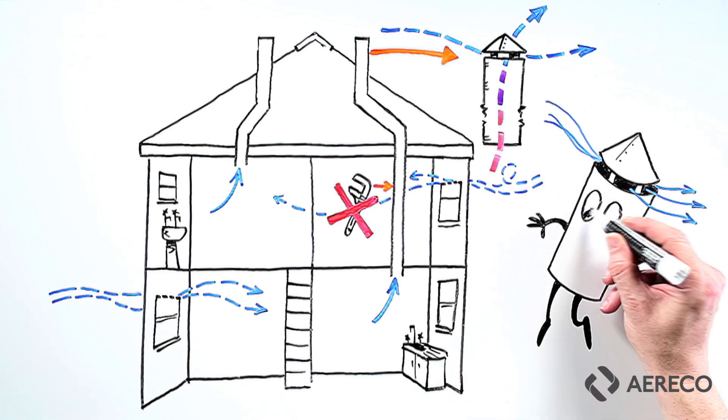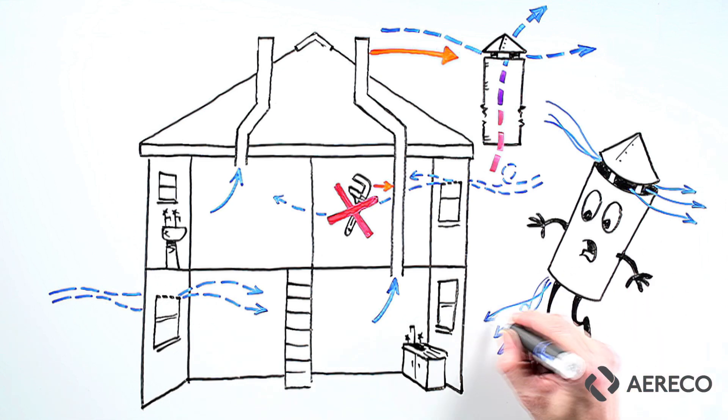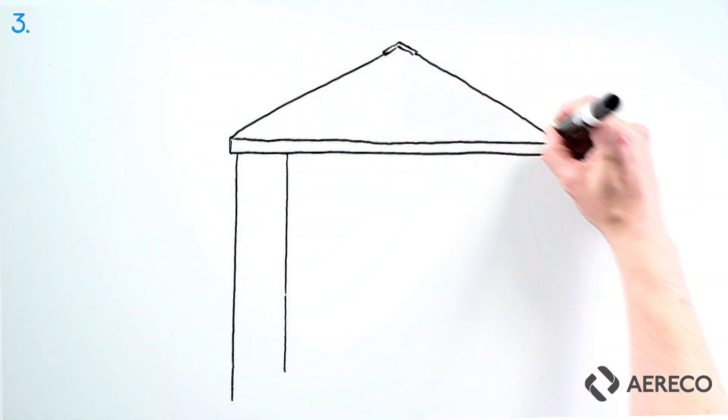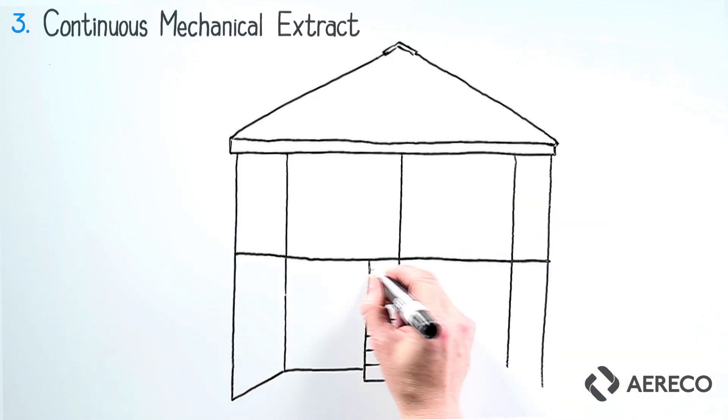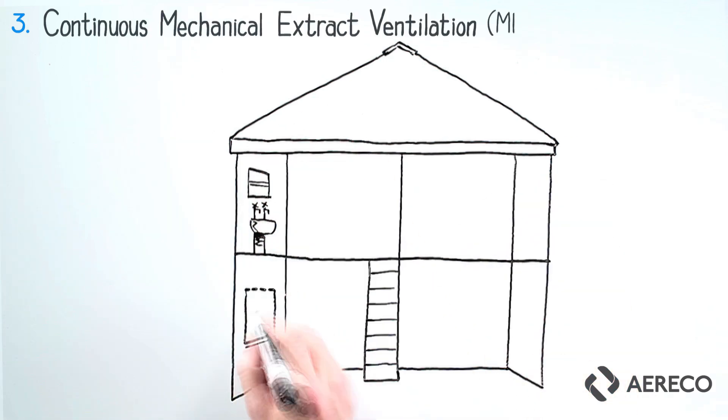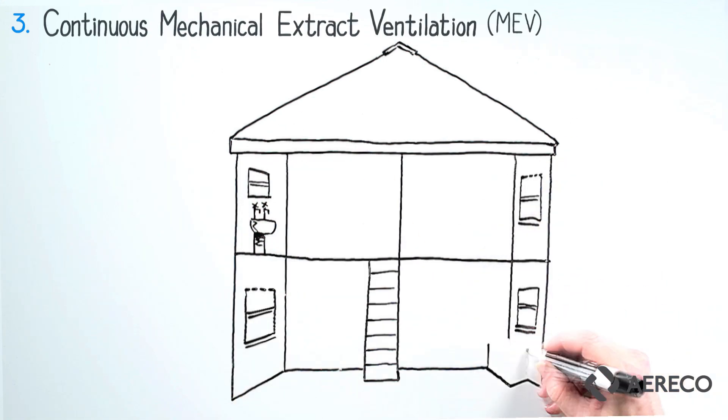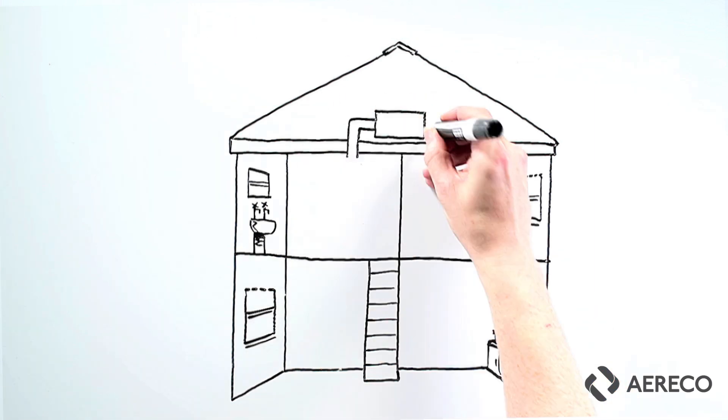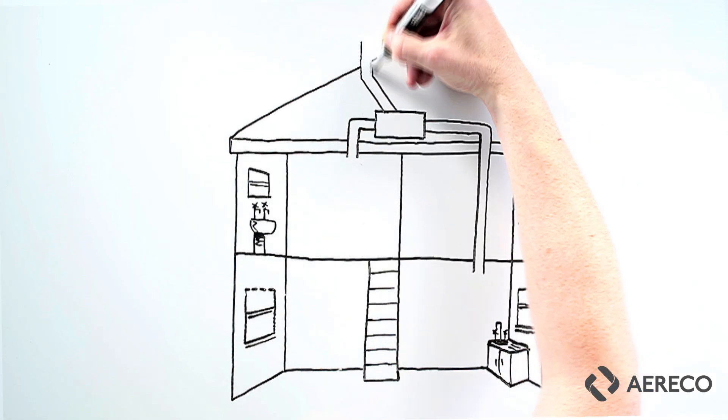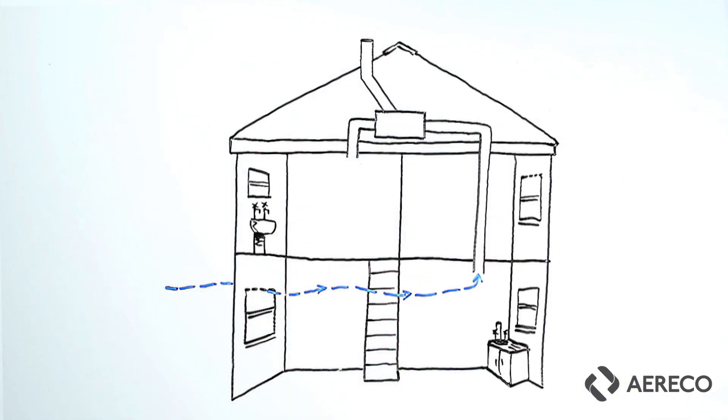Three: continuous mechanical extract ventilation or MEV. With this system we continuously extract from wet areas and supply air to dry areas through holes in walls or windows.